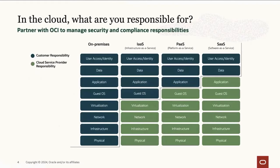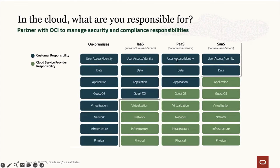Going into the cloud responsibility model: on-prem you have full customer responsibility. As you move from IaaS, infrastructure as a service, to SaaS, software as a service, you can see the shift from customer responsibility to Oracle responsibility. IaaS might be a VM running in OCI; PaaS includes Oracle Analytics Cloud or Oracle Integration Cloud; and SaaS includes your Fusion apps - the breakdown depends on your security and compliance responsibilities.